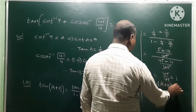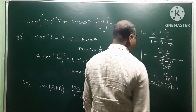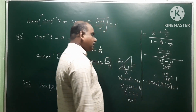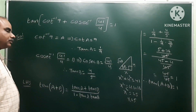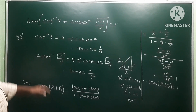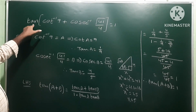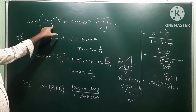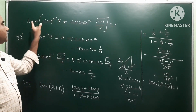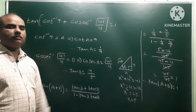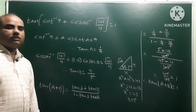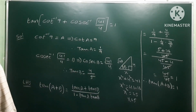Therefore tan(a + b) = 1. So that is the proof: tan(cot⁻¹(9) + cosec⁻¹(√41/4)) = 1. That is the answer.